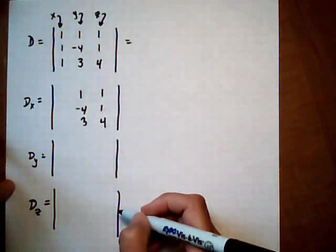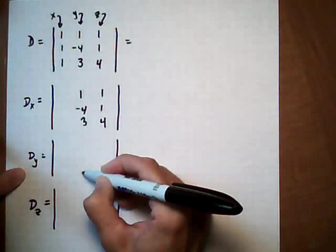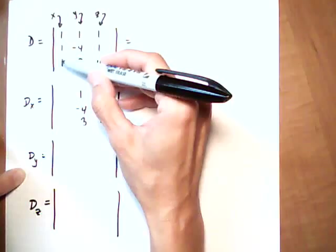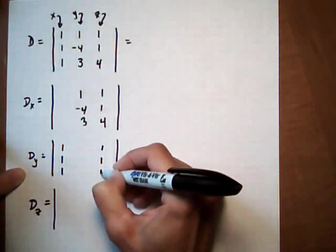Now we go to Dy. We're going to leave instead the y column, or the middle blank. And for x and z, put exactly what you see up top. 1, 1, 1, 1, 1, 4.